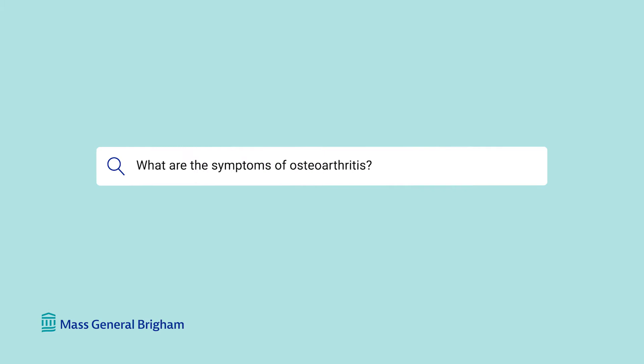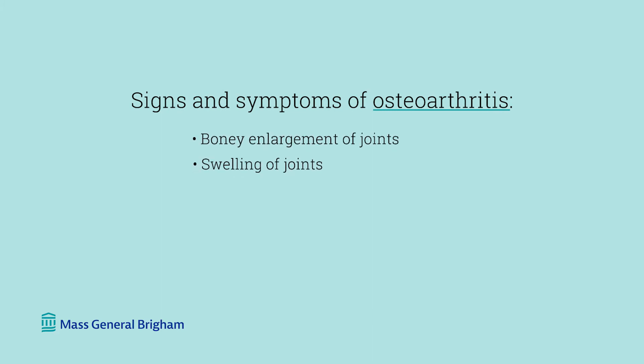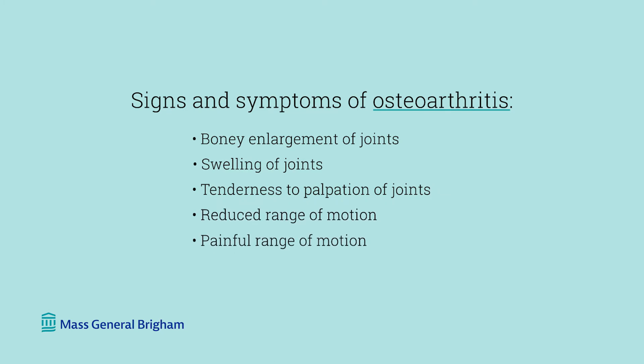What are the symptoms of osteoarthritis? The signs of osteoarthritis include bony enlargement of joints, swelling of joints, tenderness to palpation of joints, reduced range of motion, painful range of motion, and crepitus — which is a crackling sound when the joint is put through the range of motion. This is most commonly seen at the knees.